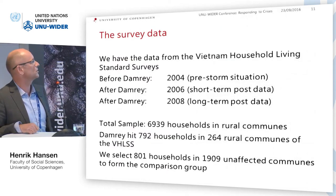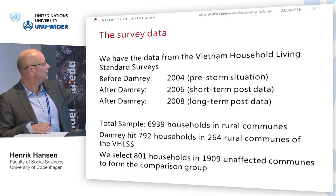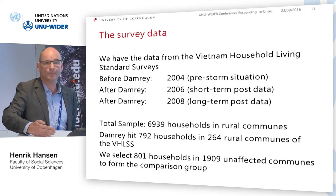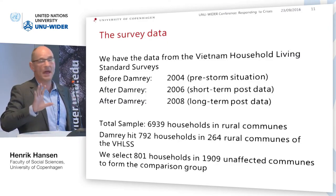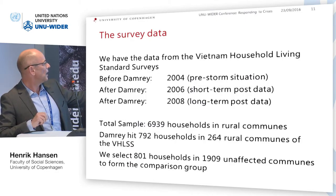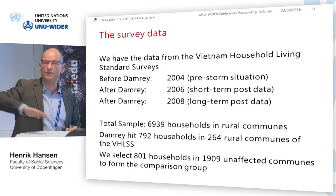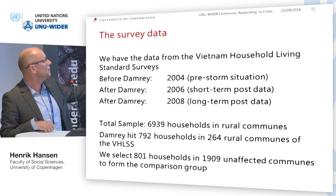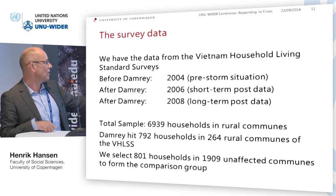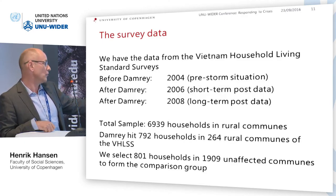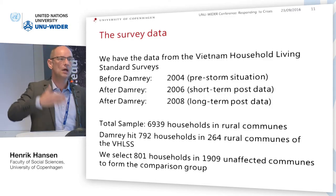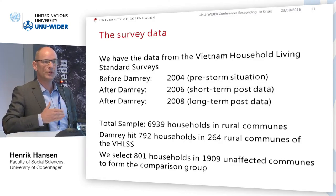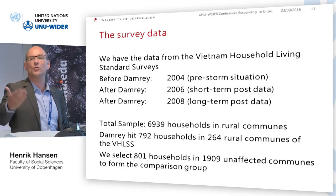We take before-and-after comparisons around the storm. Our pre-Damrey data is from the Vietnam Household Living Standards Survey. The storm happened in 2005, and we have 2006 data for the same communes — that's the short term. We also have 2008 data to check longer-term recovery. We compare 2004 to 2006 and 2004 to 2008. There are roughly 7,000 households in rural communes; Damrey hit around 800 of these in 264 communes. We select 801 households in unaffected communes as the comparison group, using a standard difference-in-differences approach.